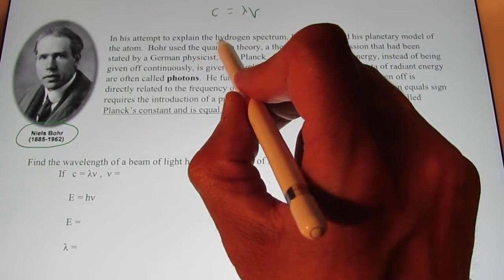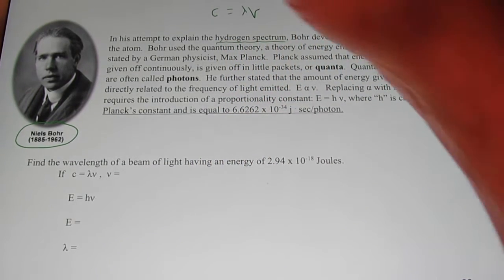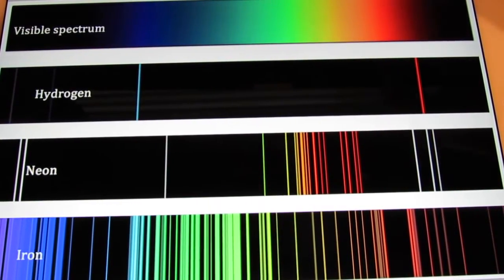Now first of all, what do I mean when I say in his attempt to explain the hydrogen spectrum? Let's take a look at the hydrogen spectrum, folks. Up on top here, I have what's called the visible spectrum. You're familiar with that. We've talked about that already.